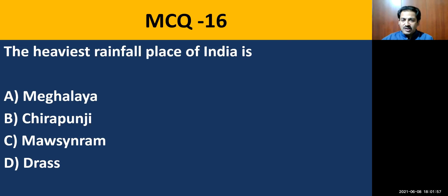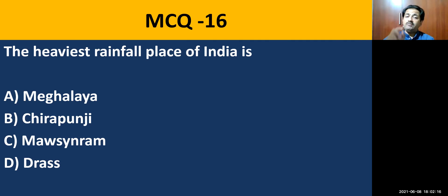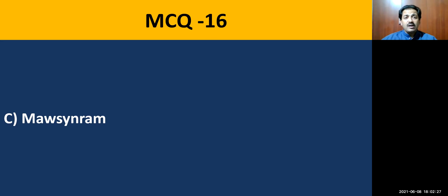MCQ question number sixteen: the heaviest rainfall place of India is asked. Don't jump to conclusion — read the question stem carefully. The correct answer is Mawsynram, which receives almost 1141 centimeters of rainfall annually.